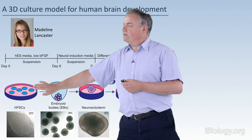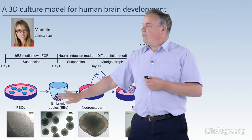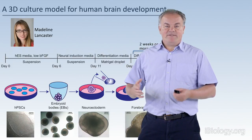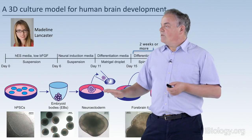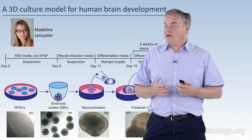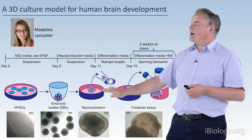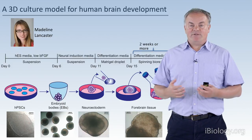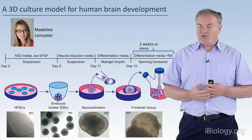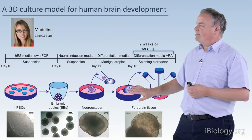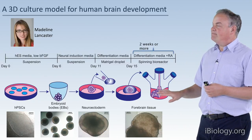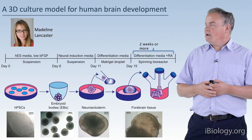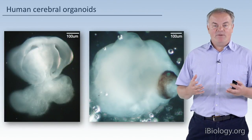We give the embryoid bodies just enough time to form the three germ layers, then replace the medium with a neural induction medium so that only the neural ectoderm survives. These balls of neural ectoderm are then placed into droplets of matrigel — a collagenous three-dimensional support matrix — which supports the development of a stem cell-derived tissue. We then culture these matrigel droplets, first in floating culture and later either in a spinning bioreactor or, more recently, in an orbital shaker. Over time, Madeleine saw the development of fairly complex tissues — what we call cerebral organoids.